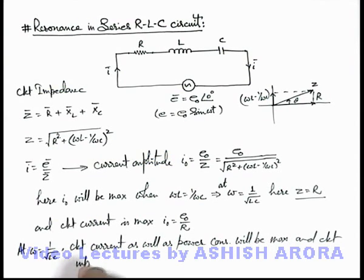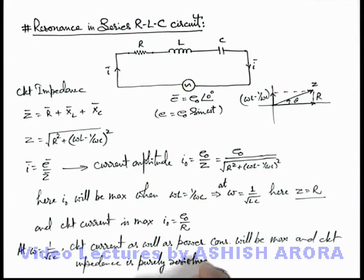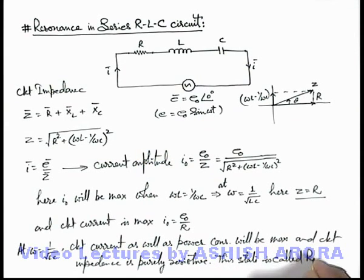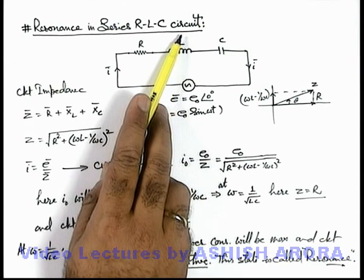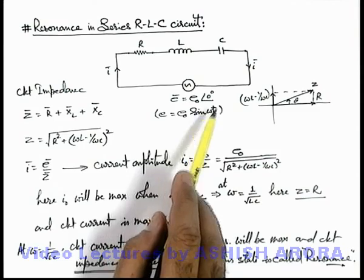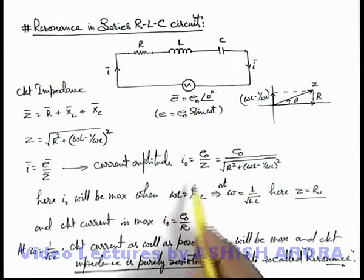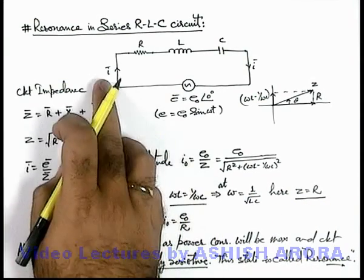The circuit impedance is purely resistive, and this state is called resonance in the series RLC circuit. In general, the state of resonance is defined such that the circuit impedance is purely resistive — in some situations it becomes maximum, in some situations minimum, when the circuit components are connected in parallel, as we will see later. Resonance in a series RLC circuit is the state when the source frequency is adjusted, or L and C are chosen, such that they nullify the effect of each other, the circuit impedance becomes purely resistive, and the circuit current and power become maximum.